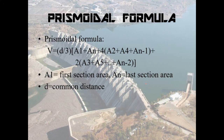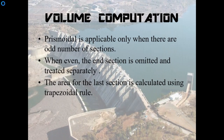The Prismoidal formula is another formula used to find the volume of the reservoir. The terminology is the same. Mark this point: Prismoidal is applicable only if the number of sections is odd. When the number of sections is even, the end section is omitted and treated separately. The area for the last section is calculated using the trapezoidal rule and then the result is added.